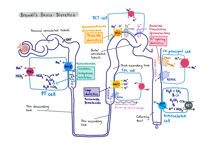Here you can see the complete kidney tubule and all the different targets of the diuretics. Drugs that act in the proximal convoluted tubule are the carbonic anhydrase inhibitors, which block carbonic anhydrase and thereby indirectly block NHE. The loop diuretics act in the loop of Henle and block NKCC, responsible for about 25% of sodium reabsorption. In the distal convoluted tubule, thiazide diuretics block NCC, and in the collecting duct, potassium-sparing diuretics target ENaC.